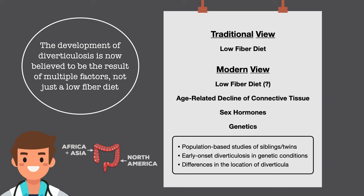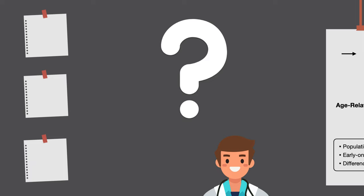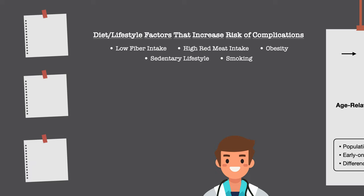All of this is to say that the low-fiber hypothesis makes it seem like the development of diverticulosis would be 100% preventable, but in reality some of the factors associated with it are beyond our control. Exactly what causes the progression from diverticulosis to diverticulitis and diverticular hemorrhage is not completely understood. However, diet and lifestyle do appear to play a significant role. Observational studies have shown that low-fiber intake, high red meat intake, sedentary lifestyle, obesity, and smoking all increase the risk of complications.